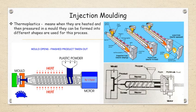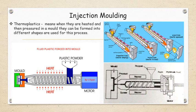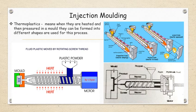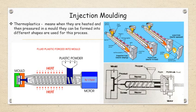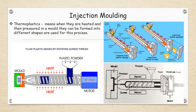Thermoplastic materials are heated and then pressurized in the mold so that they can be formed into different shapes in the injection molding process. An animation of this injection molding process is shown. The process consists of heating thermoplastic material until it melts and then injecting it into a steel mold where it cools and solidifies to take its final shape.